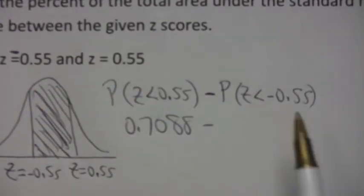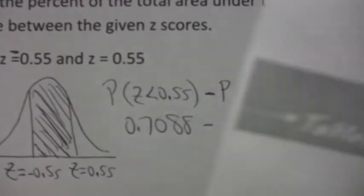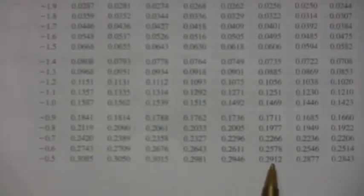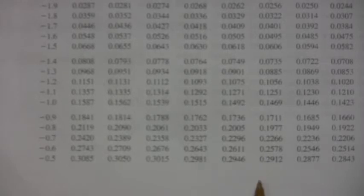When you look up negative 0.55 in the table, right there, you get 0.2912.